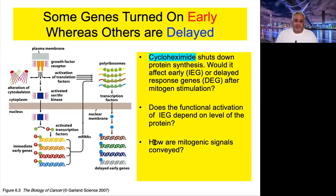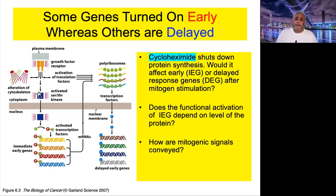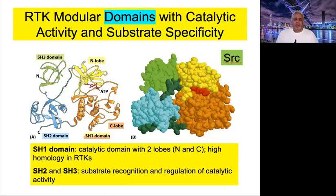The last question is how mitogenic signals are conveyed from the cell surface to the nucleus. Two things are going on: one is localized change happening in the same geography, and the second involves protein factors that migrate throughout the cell, changing their localization. We can investigate those parameters.